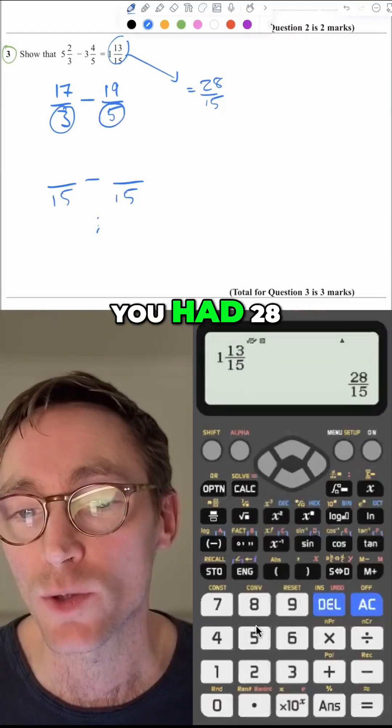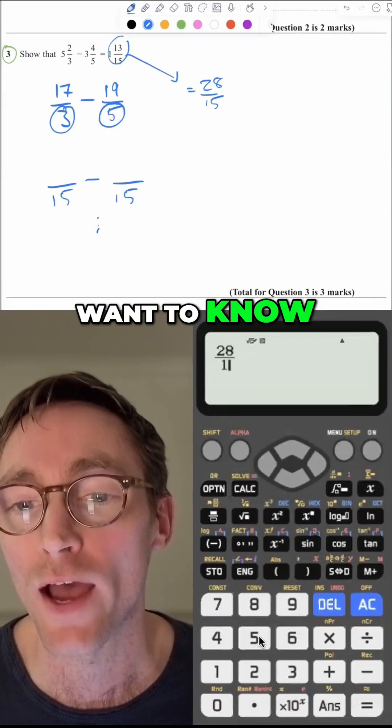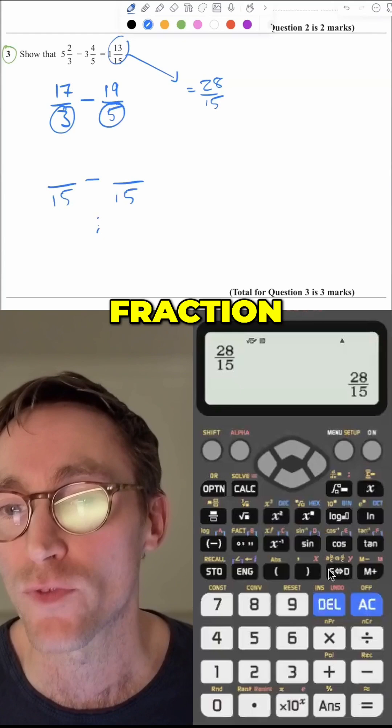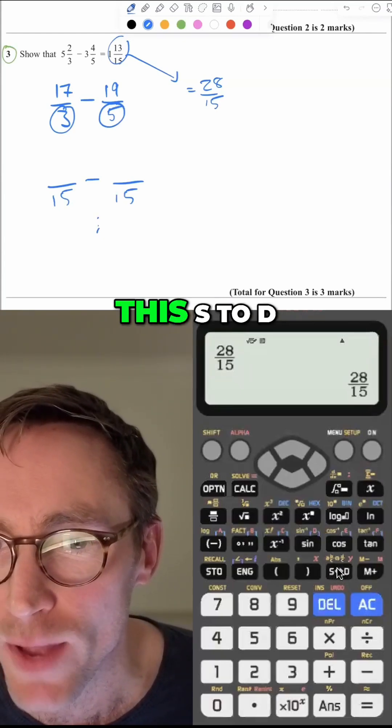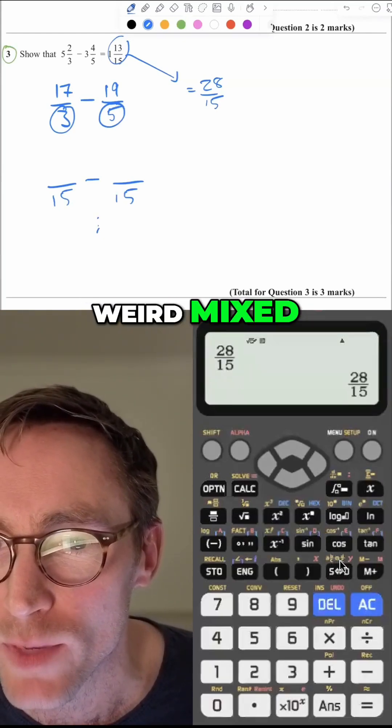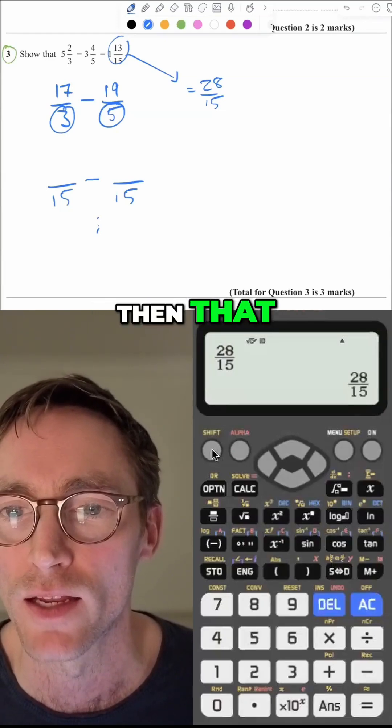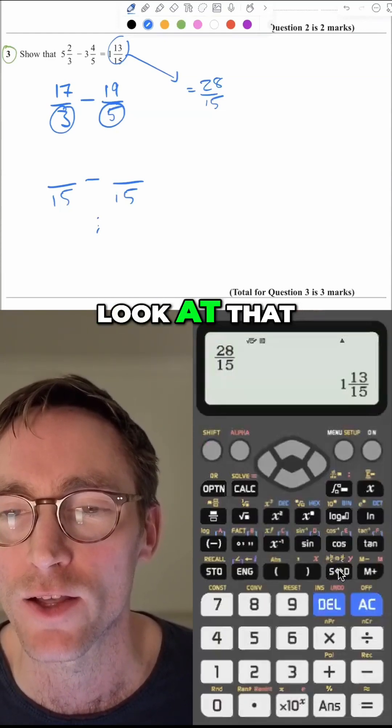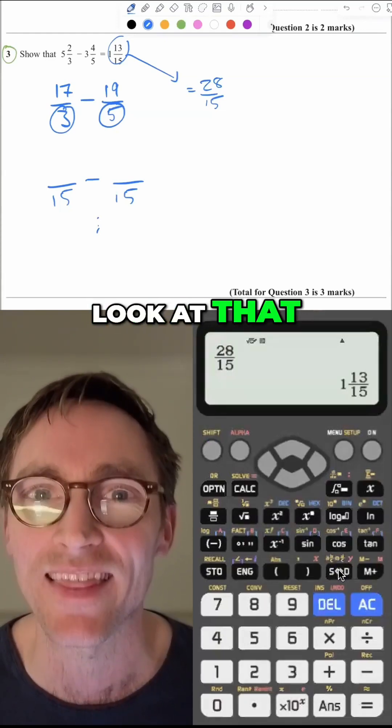Just know how your calculator works. If you had 28 over 15 and you want to know how to turn that back into a mixed number fraction, do you see above this S to D button is this pretty weird mixed fraction to fraction thing. So you want to hit shift and then that. You go shift and then that. Look at that.